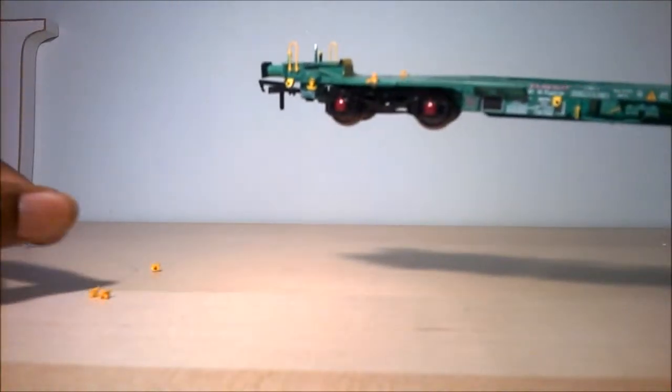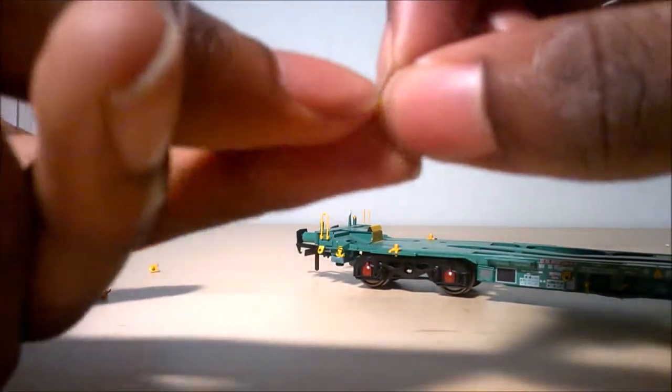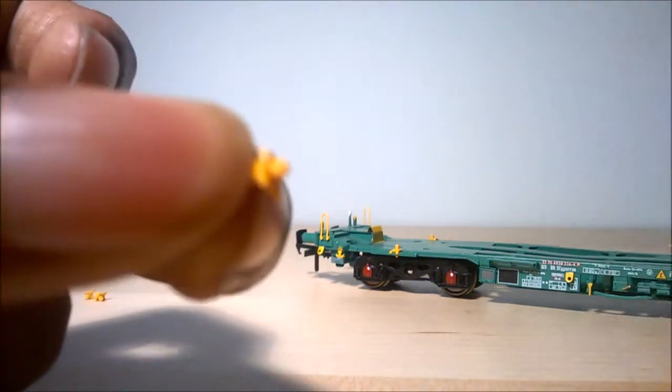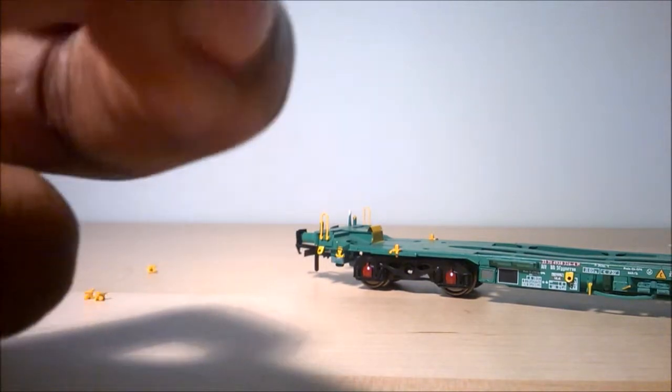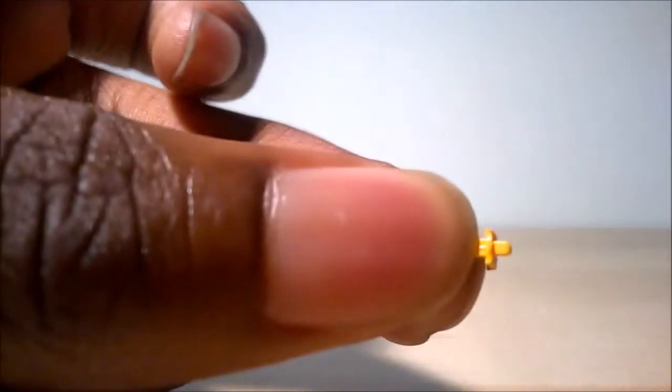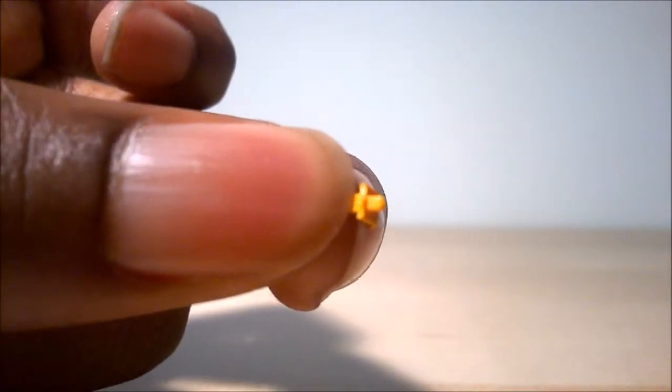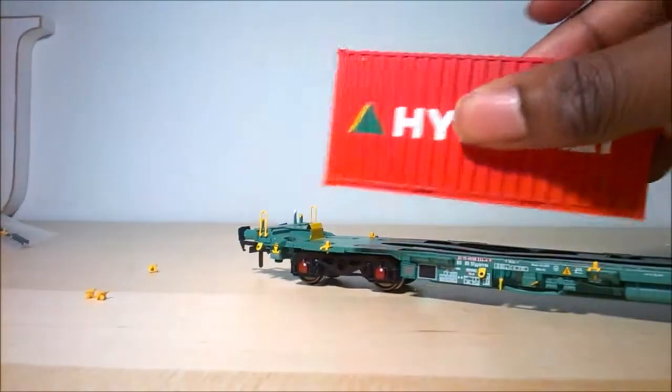So all of these little yellow things that you see falling off during this video, if I can show you how tiny they are. This tiny thing is what you have to use to attach the containers on to here.